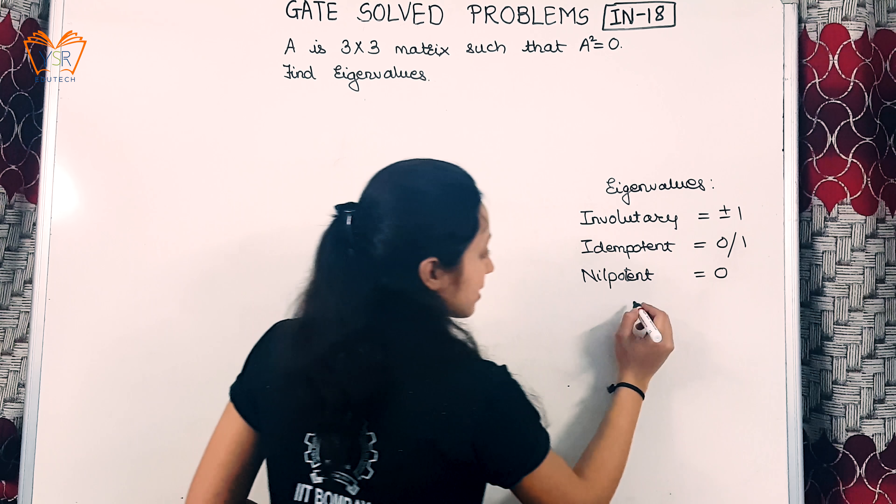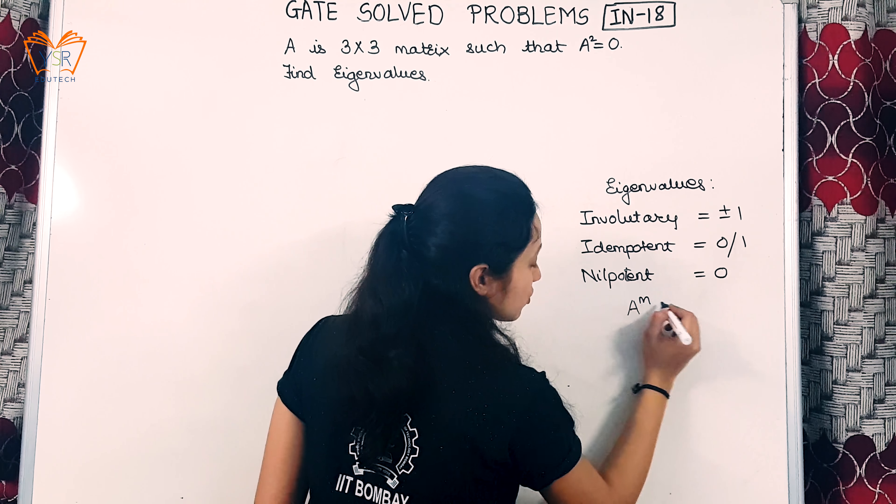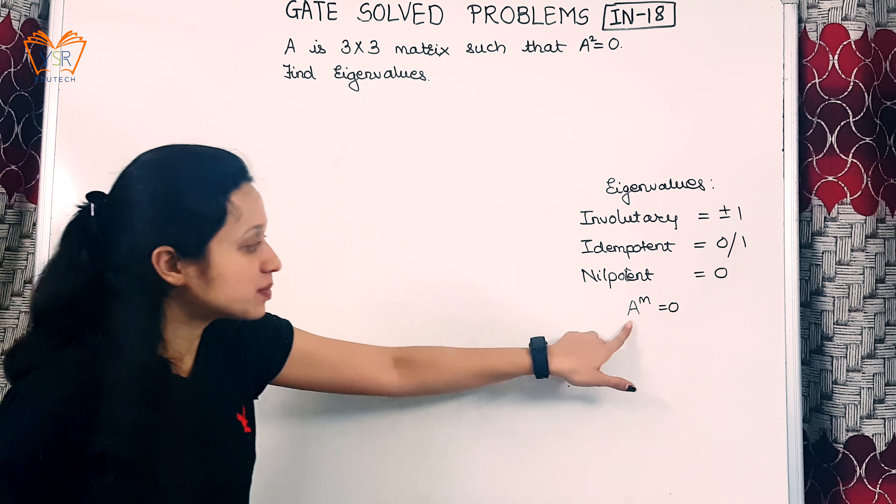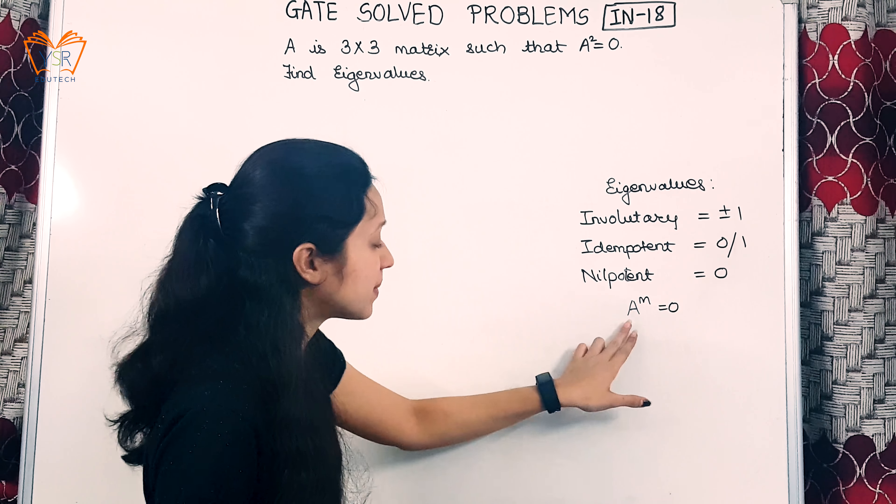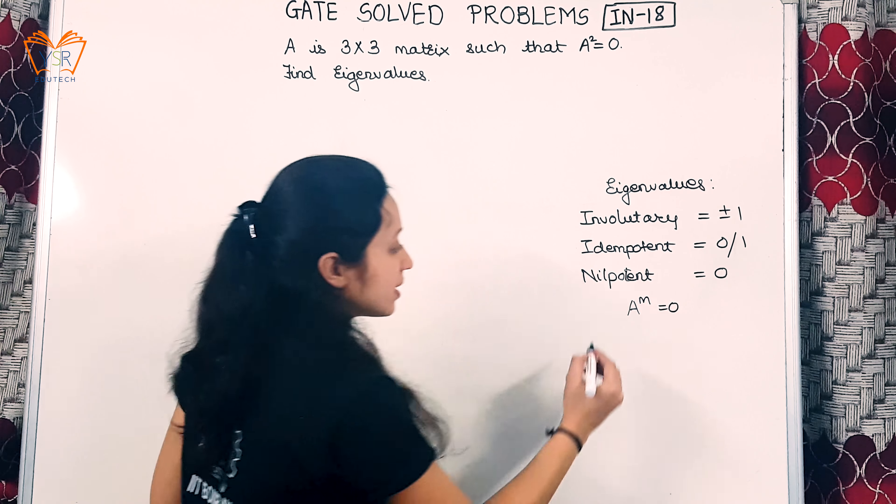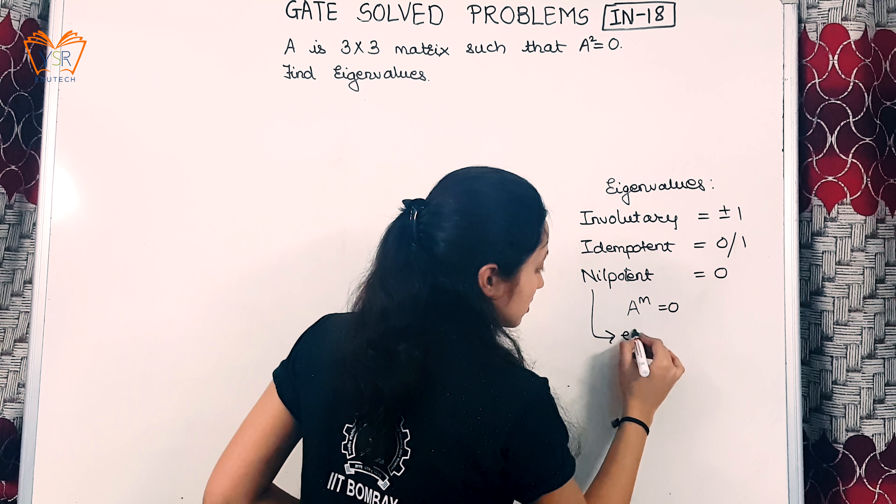Now we know if the matrix is of form A^M = 0, such matrices are called nilpotent matrices. And if the matrix is nilpotent, its eigenvalues are always 0.